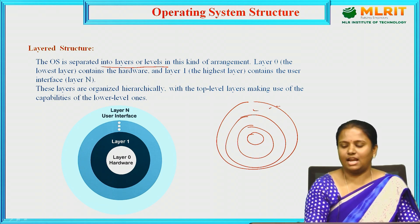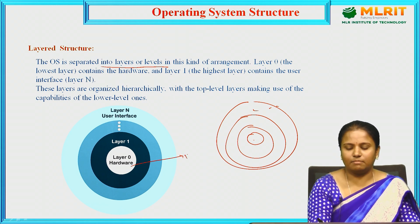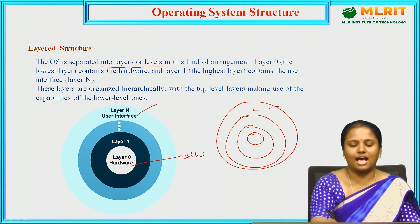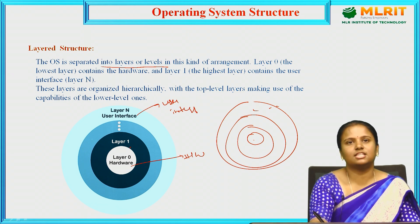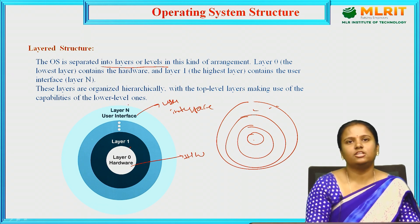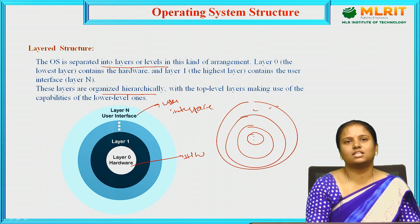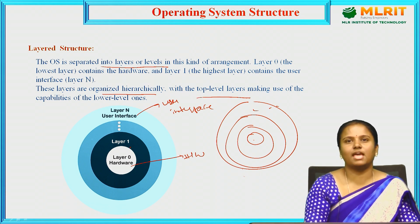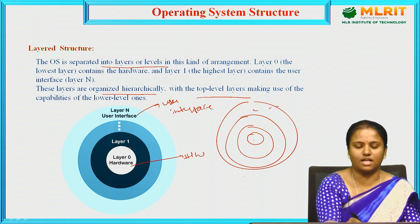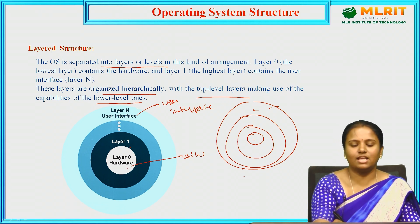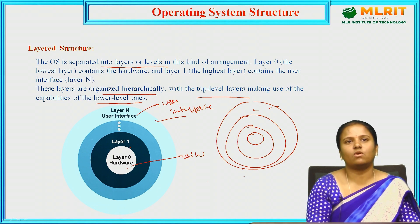In the layered arrangement, layer 0 is the hardware, and the highest level — layer N — contains the user interface. These layers are organized hierarchically from bottom to top, with the top-level layers making use of the capabilities of the lower ones. The lowest level is layer 0 (hardware) and the highest is layer N (user interface).